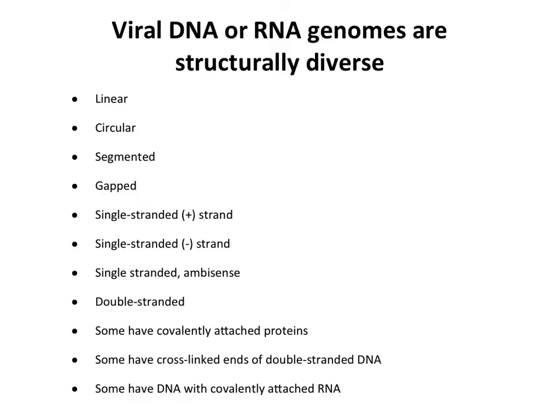Gapped, as we said already, with hepatitis B. Single strands of plus and minus polarity. There's also a single-stranded genome that's ambi-sense — it's got components of both plus and minus strands in it, which is pretty unusual. We have double-stranded, of course. And some genomes have proteins covalently attached to them. Some have the ends cross-linked, so where you would normally have 5' and 3' prime ends, they're cross-linked and you have a little circle at the end. If you denature it, it would become a single-stranded circle. And some have DNA with covalently attached RNA.